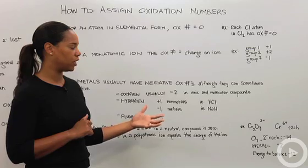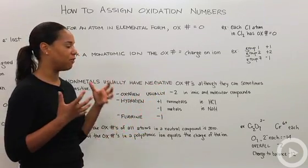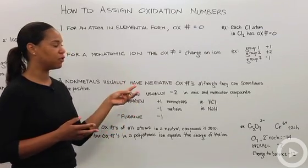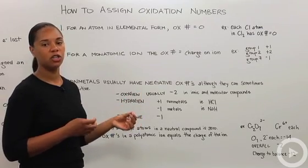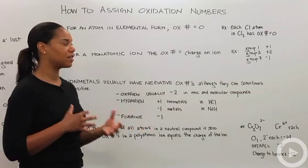But we know the overall charge on the polyatomic is two minus, which means we have a charge of negative 12 that's unaccounted for. So that means if we have two chromiums, each of those chromiums must be a positive six charge in order to counterbalance the minus 12 charge.